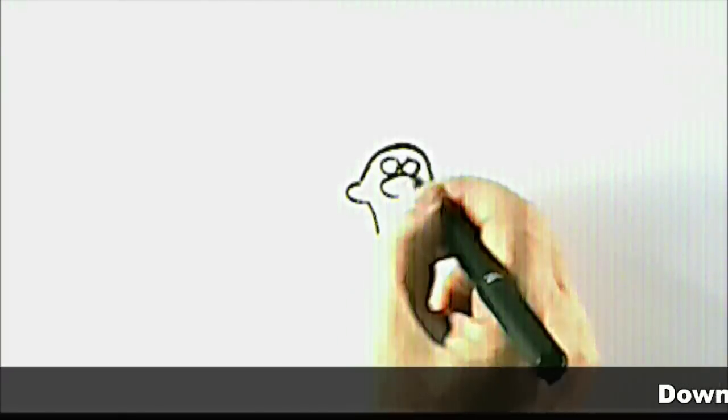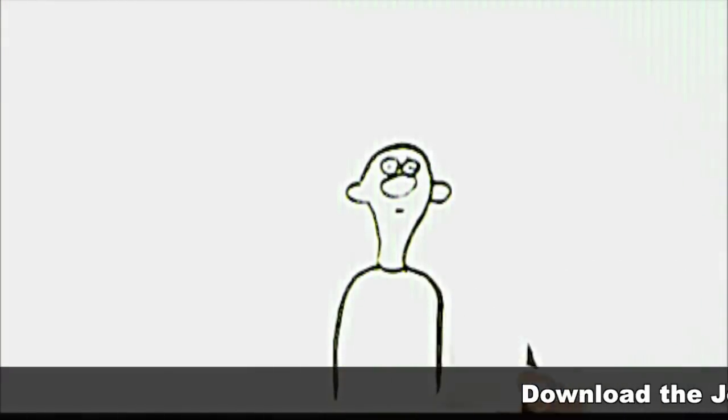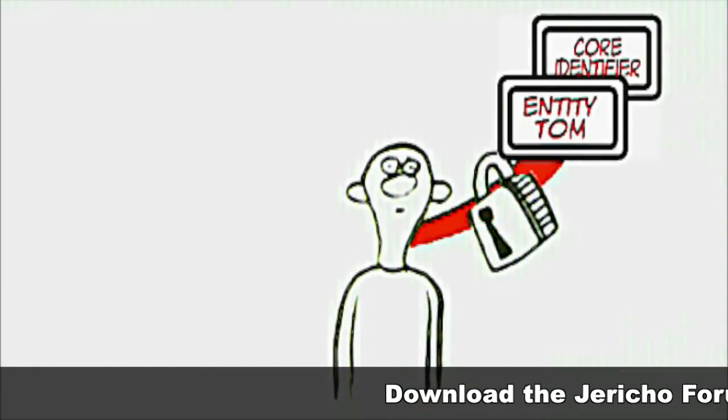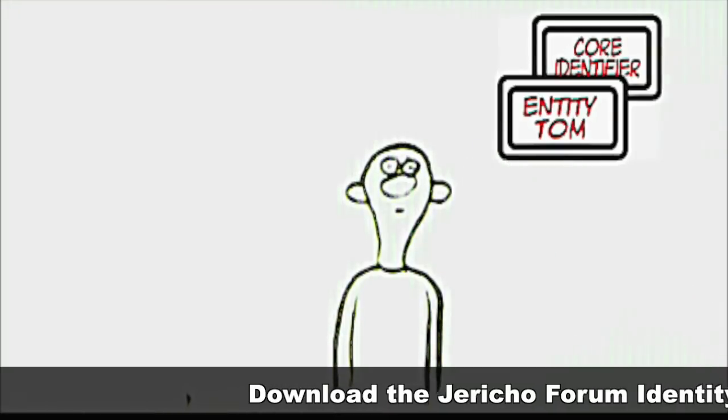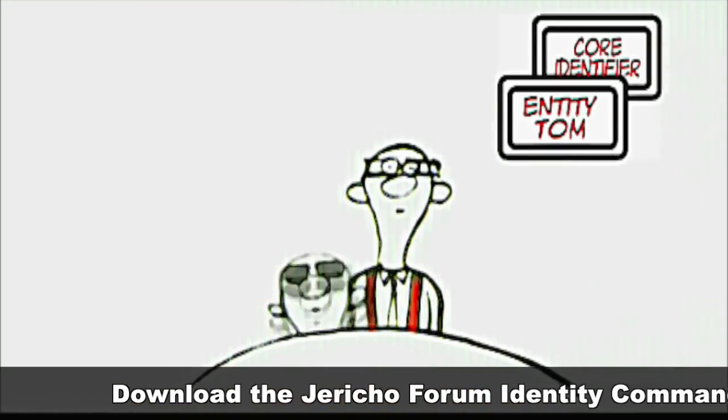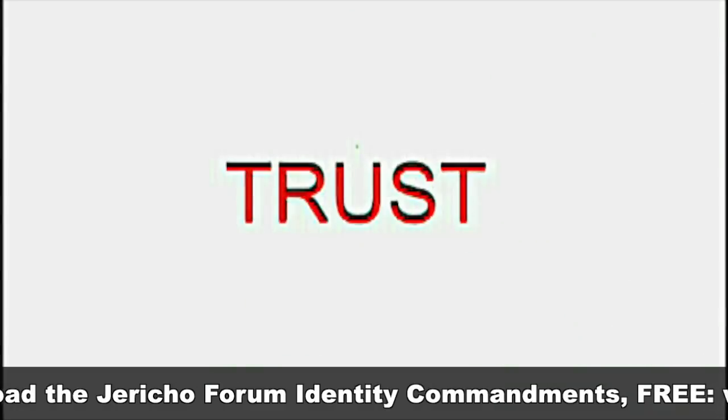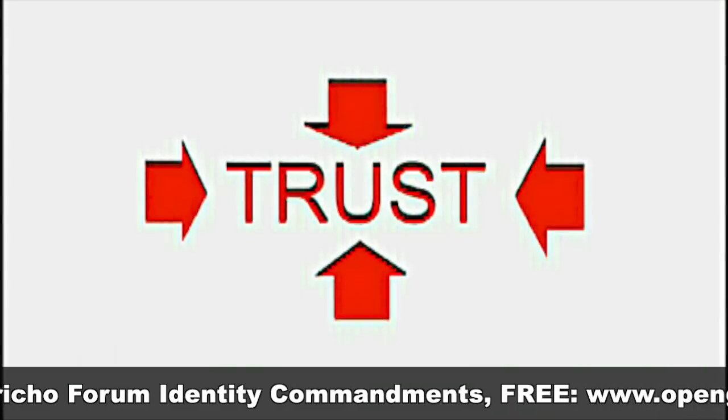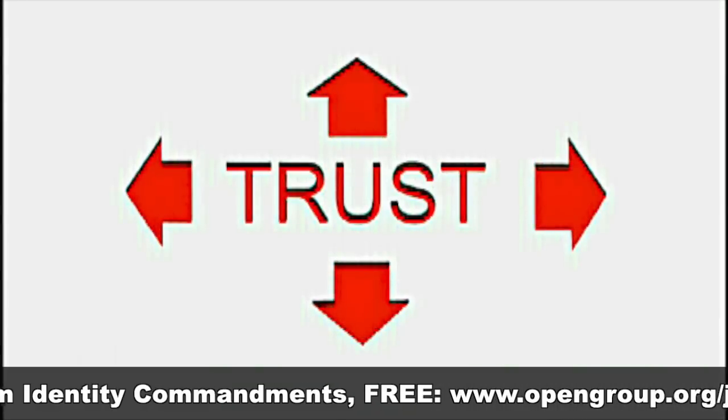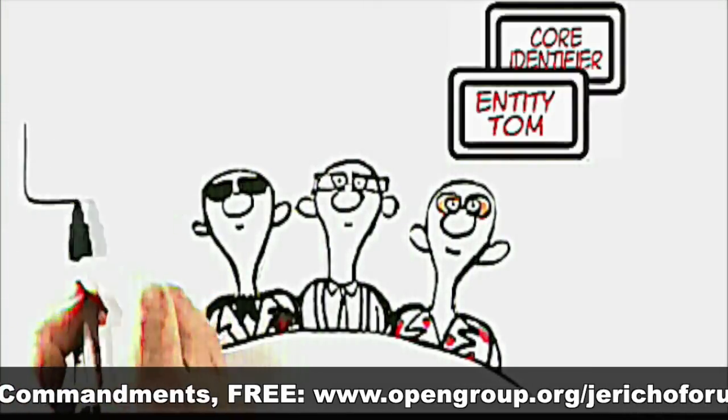In the first two Jericho Forum identity videos, we learned about entities having a core identifier with immutable linking and how you can use this to create a series of personas. Now we are going to explore further the concept of trust and the sources of that trust in terms of persona and attributes.